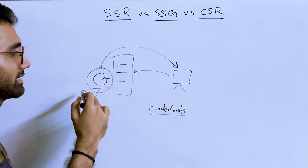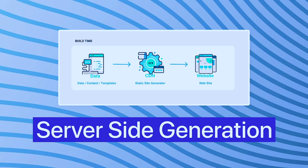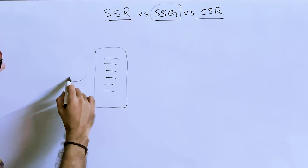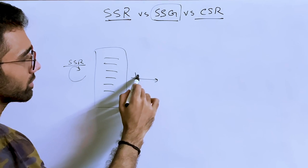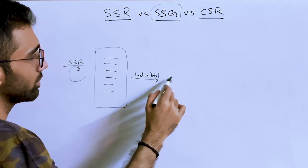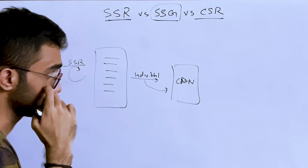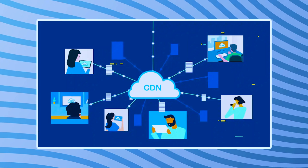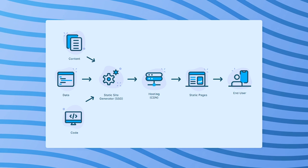To fix this, we use Static Site Generation. You still have a server generating a server-side page, but you store the resulting index.html file on a CDN. CDNs are optimized for file delivery, so if the client requests it and the CDN already has it, it sends it immediately — much faster in terms of response time.